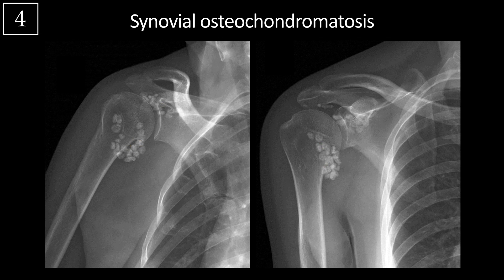When the loose bodies are non-ossified, the term synovial chondromatosis is preferred. These patients often have pain, swelling, and limited range of motion. It's a progressive disease seen more commonly in males, tends to affect a single joint — monoarticular — and is most common in the knee, up to 70% of cases, then the hip, elbow; the shoulder is actually less common. The bursa or tendon sheaths may also be involved, and you may see pressure erosion of adjacent bone — for example, apple core remodeling of the femoral neck when it occurs in the hip.